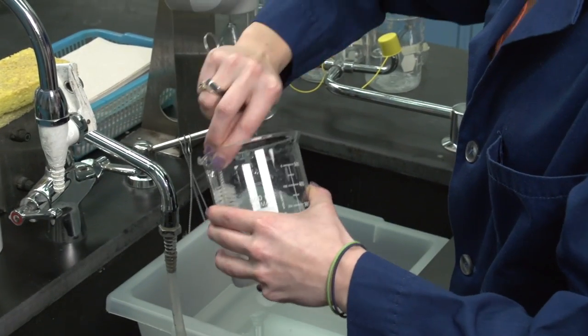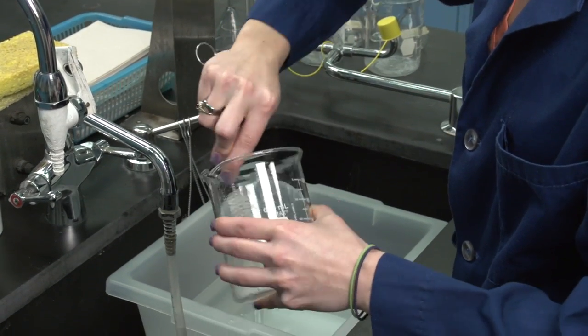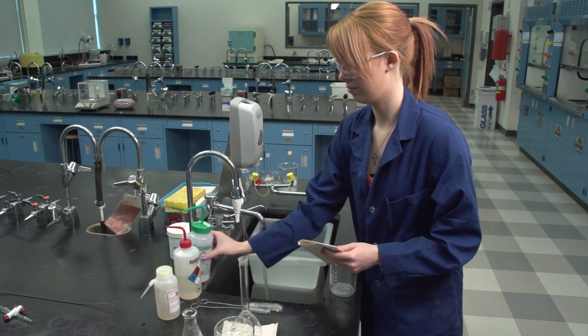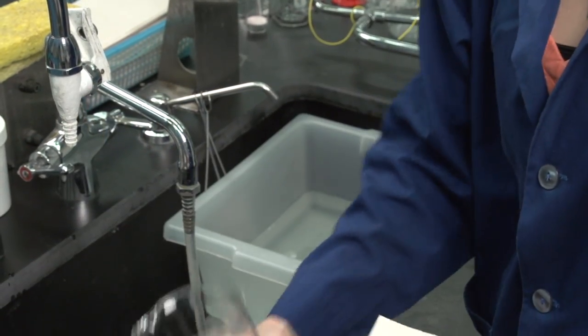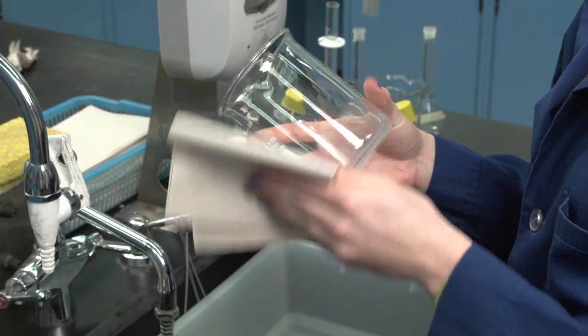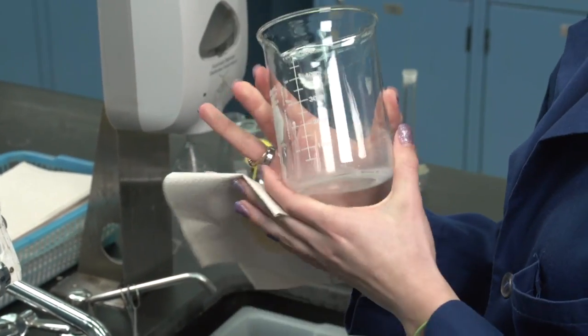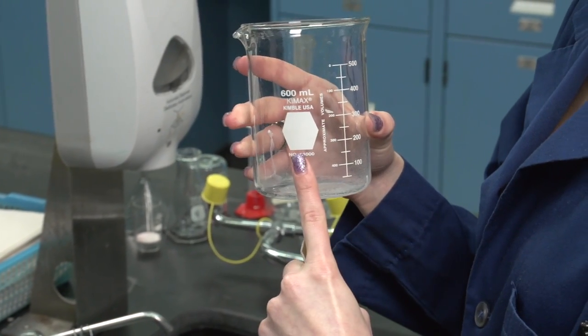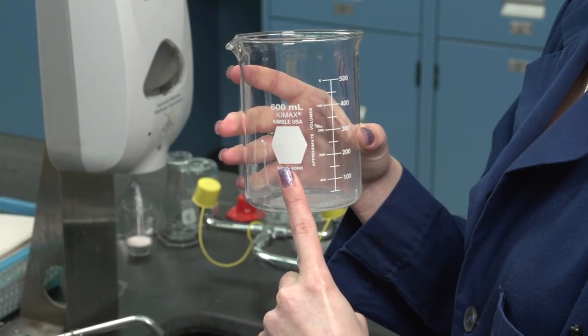When cleaning glassware, all pre-existent chemical labels should be removed. Squirt methanol on a paper towel and wipe the outsides of your glassware. Never squirt methanol on glassware as it produces unnecessary waste. Marker labels should never be applied in the white area of glassware.